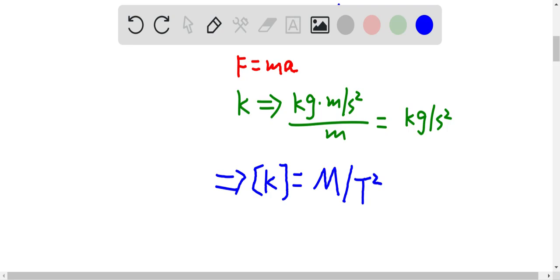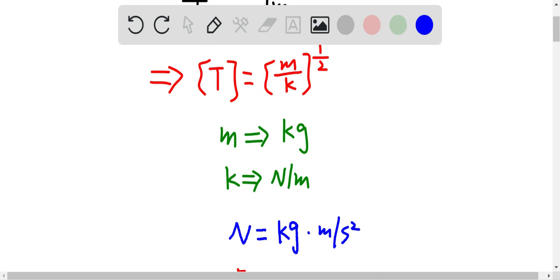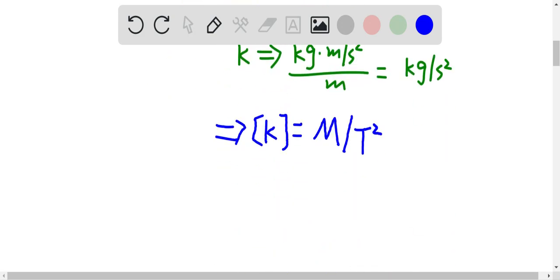So therefore, time period squared is equal to second squared. And then, therefore, the mass here should be equal to capital M. So therefore...